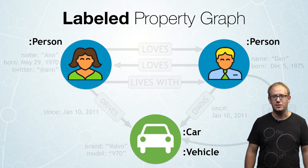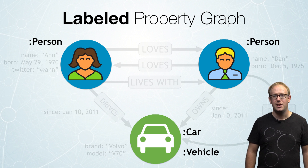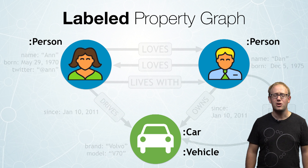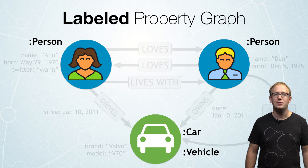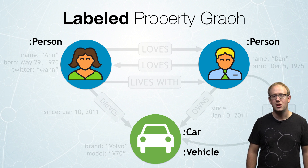In this case, Dan and Ann are both person nodes. Dan also has this car, which we're going to call a car node. We can also add a more generic label to the car, which is vehicle.